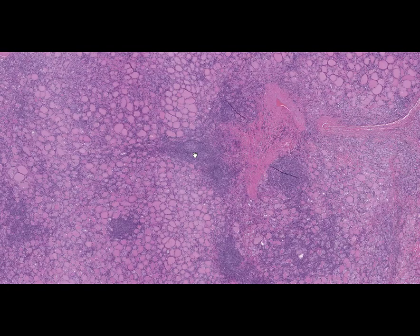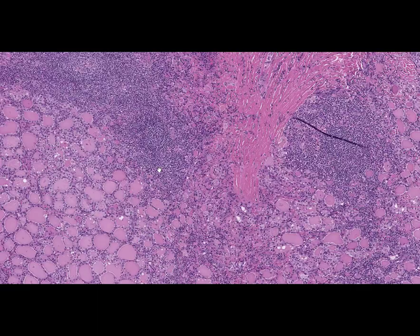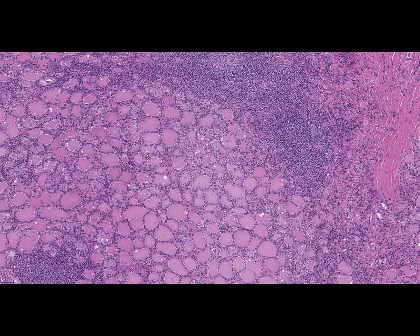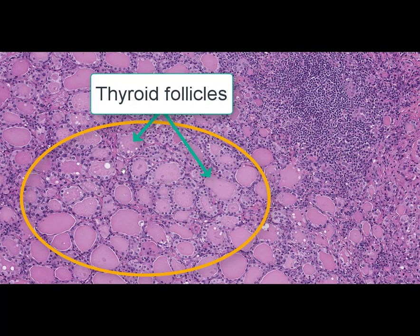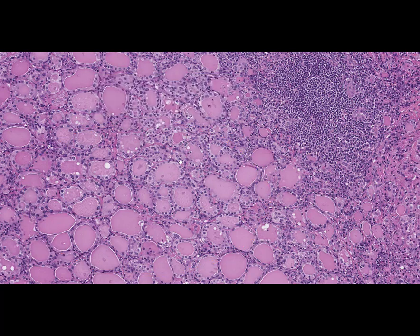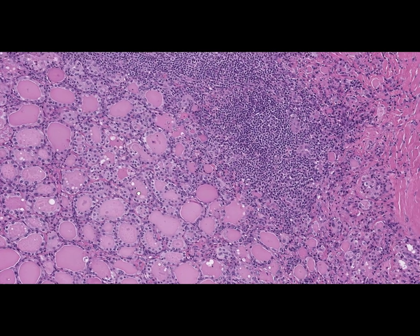At low magnification, the structure of the thyroid gland is non-homogeneous. We can see clearly expressed basophilic areas composed of lymphocytes and plasma cell infiltration. At high magnification, we can see small thyroid follicles lined with flattened epithelial cells. The most typical features are diffuse infiltration of the thyroid gland by B lymphocytes and plasma cells, replacement of follicular cells, and formation of lymphoid follicles with light germinative centers.